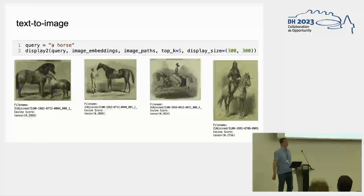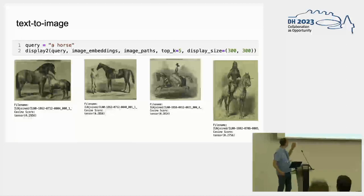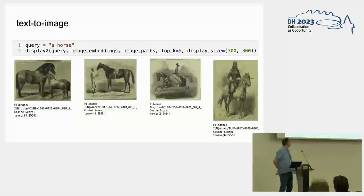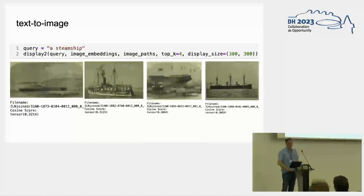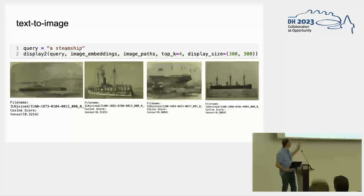To show what CLIP can do: you give a textual query and it returns the most relevant image in the dataset. This just shows that CLIP is very good at recognizing visual concepts in illustrations — you ask it for a horse and it returns a horse, the same thing goes for a steamship. For somebody who has studied illustrations for a long time this is actually a huge improvement.